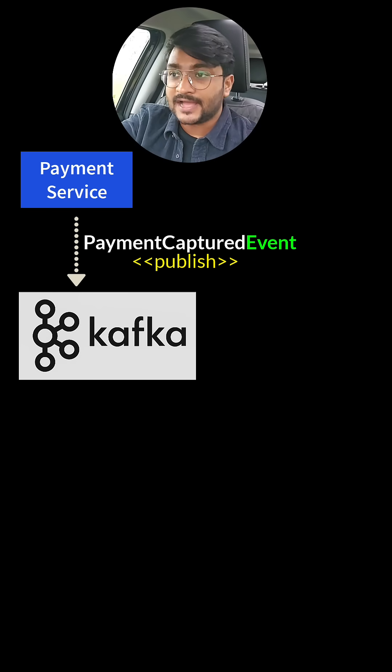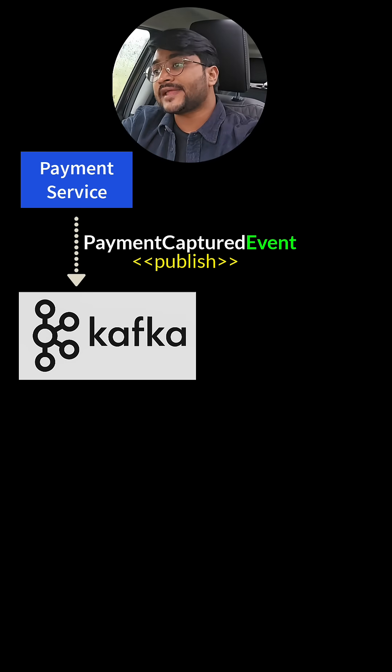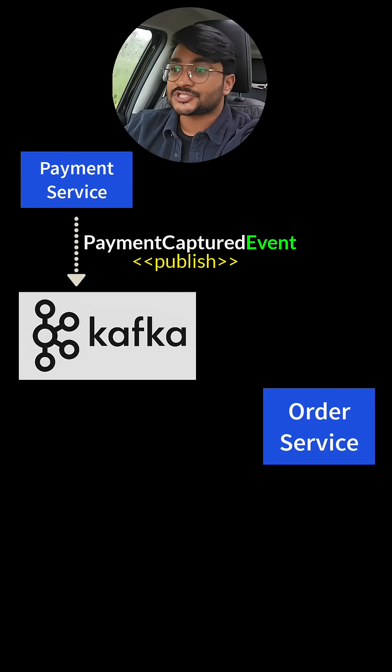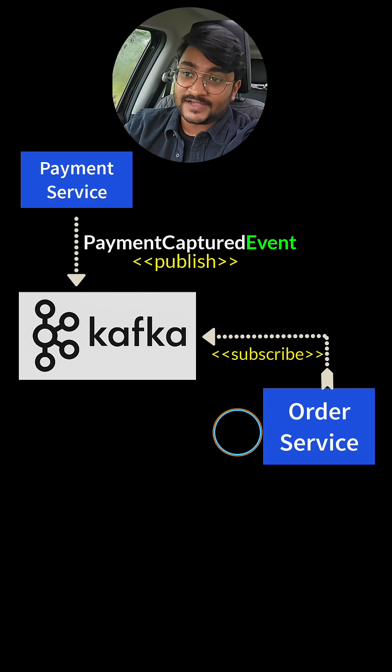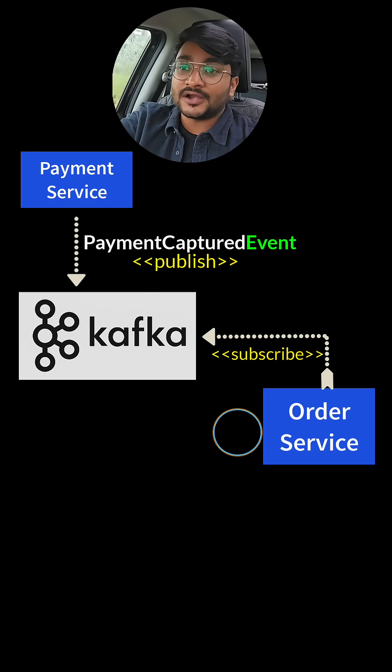Let's connect the dots with an enterprise-level application. Upon a successful payment from a user, we can create a payment captured event from a microservice — let's say the payment service. The payment service can publish this event called payment captured event to a message broker like Kafka. Then another microservice called order service subscribes to the Kafka broker, receives this event, and marks the order as booked.